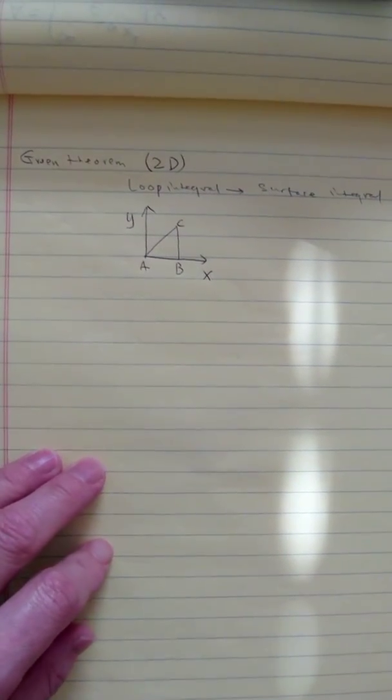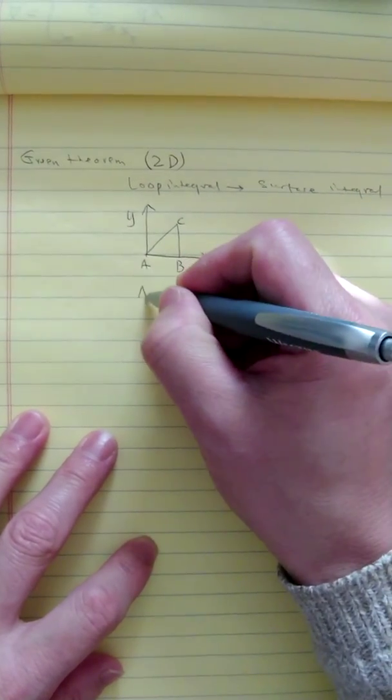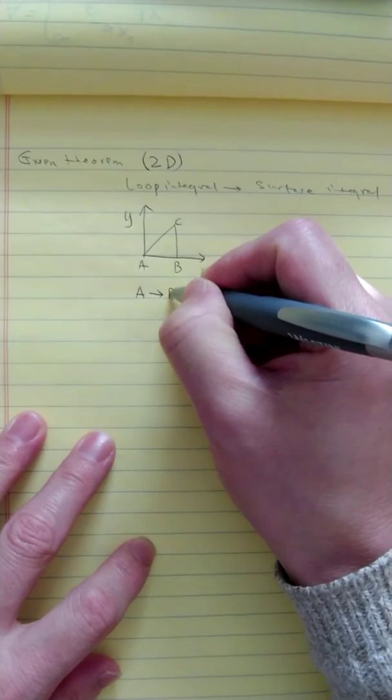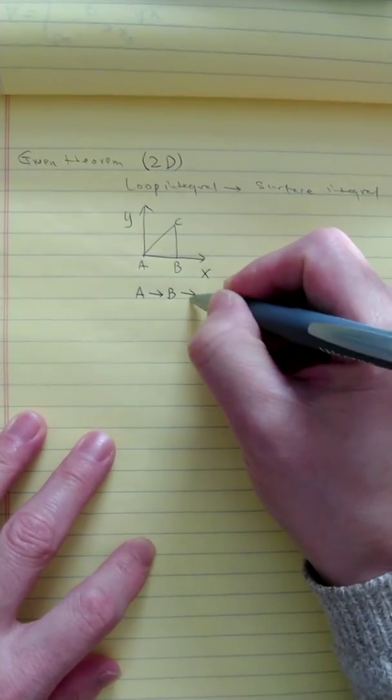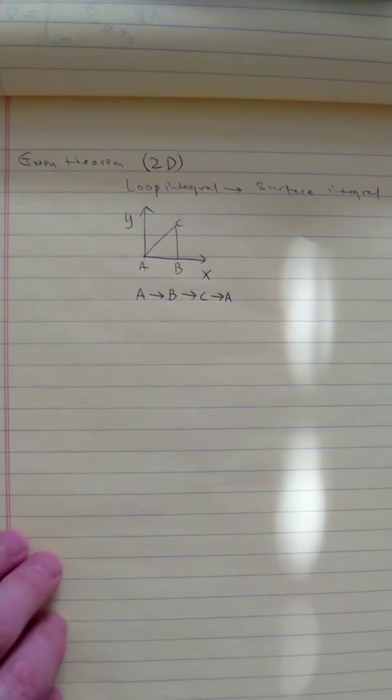So the thing is, when we do the integral, suppose we are interested in running a calculation starting from A all the way to B, and then to C, and back to A. So an integral like this is called a loop integral.